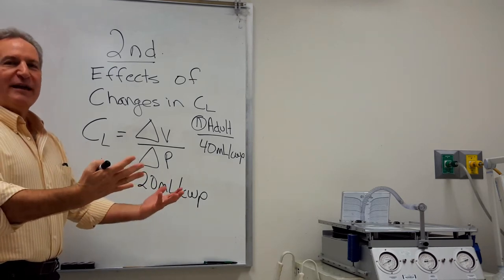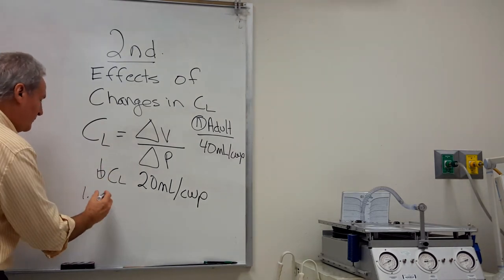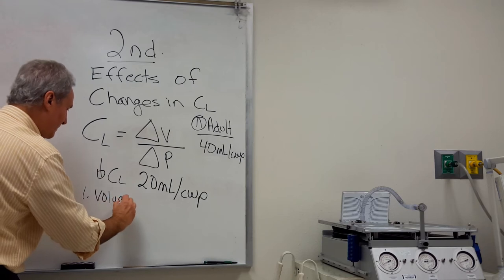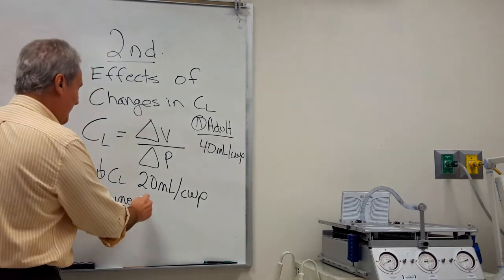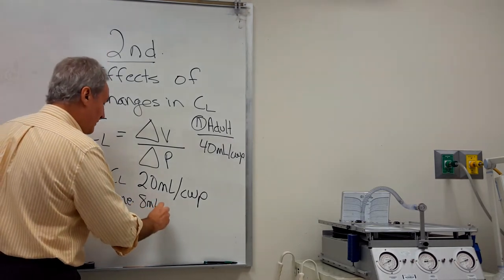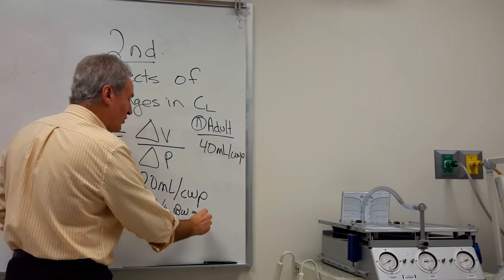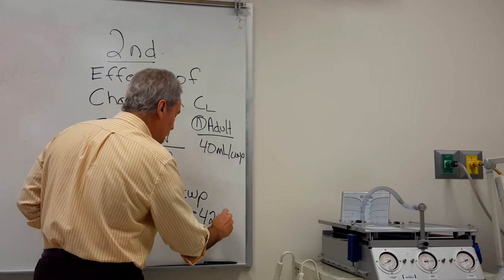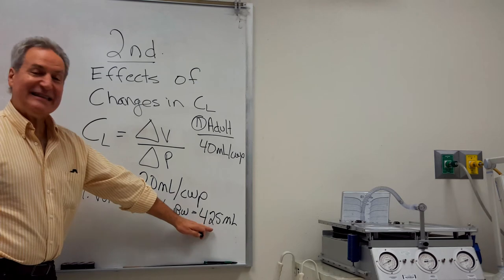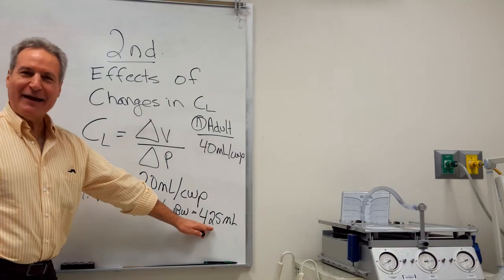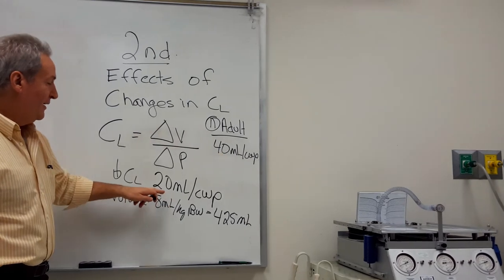How do we predict what's going to happen with the vent? Let's look at two different scenarios. The first is volume ventilation. If we're in volume ventilation and we have our patient set at 8 mL per kg of ideal body weight, which correlates to a tidal volume of 425 mL, we have a set volume the patient's going to get. But compliance has gone down from 40 to 20.